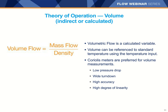Volumetric flow can also be calculated from a Coriolis meter. If you want flow in gallons per minute or liters per minute rather than kilograms per minute, volumetric flow is a calculated variable. The Coriolis meter measures mass flow and density, then divides mass flow by density to give calculated volumetric flow. Benefits include lower pressure drop, wider turndown, higher accuracy, and higher degree of linearity versus other volumetric flow meters.